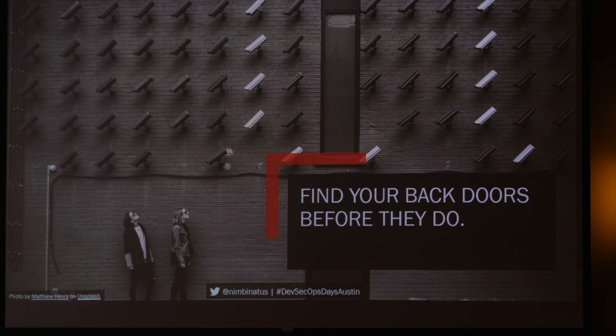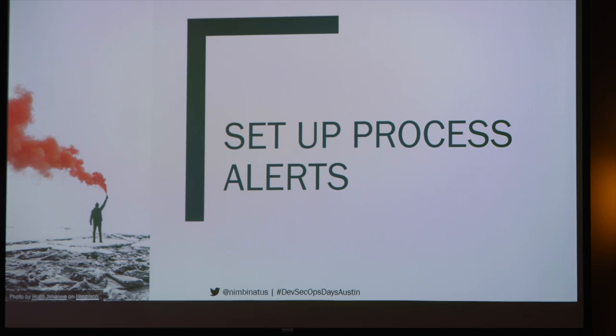You need to understand where those back doors are, so you need to actually look at all of your application event logs. How do you make that happen? You actually set up process alerts so you know if you're no longer logging. You should have a process that's doing all of your logging. If someone didn't configure that, there's an alert — it's going to tell you that you need to make more logs. We need to make sure we actually have all of those logs coming in.